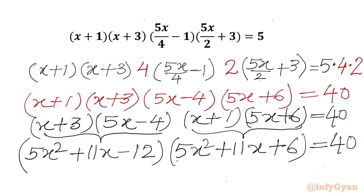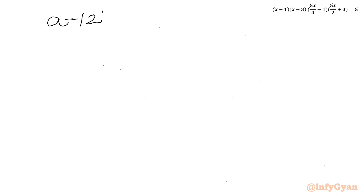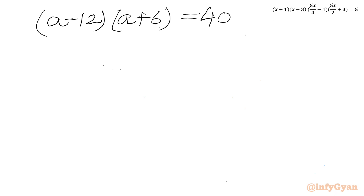You can see that 5x² + 11x appears in both expanded expressions. So let us call a = 5x² + 11x. Then we can write (a − 12)(a + 6) = 40, where a = 5x² + 11x.